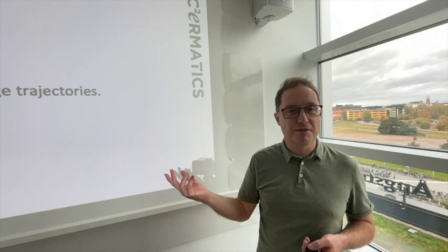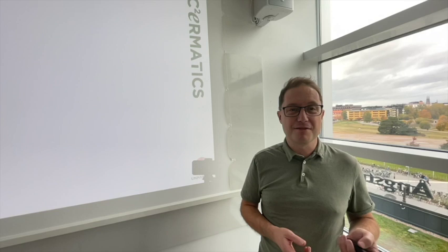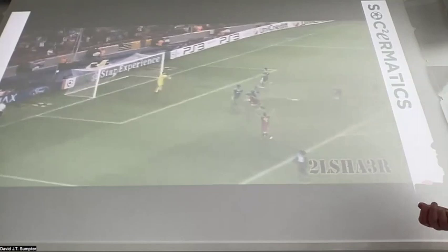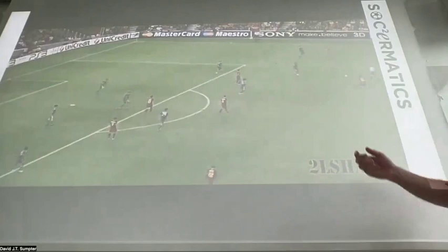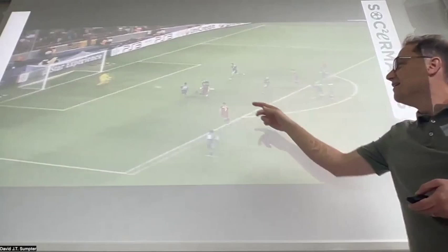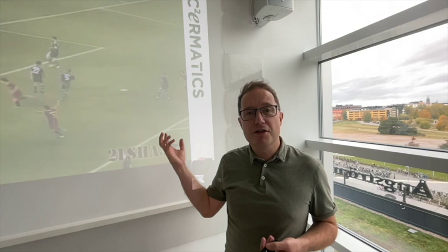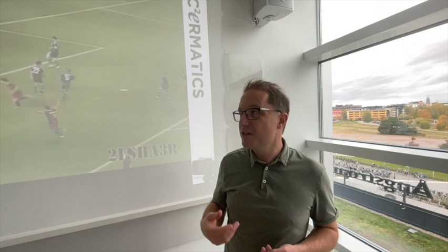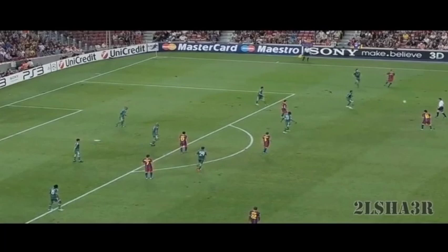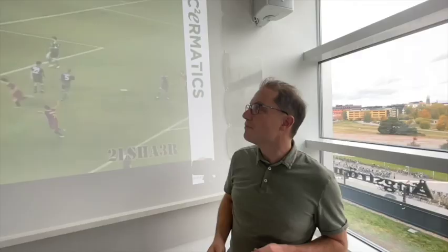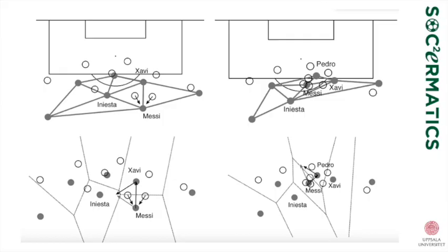So how are we going to analyze this? The first method, which I wrote about in Soccermatics, uses Voronoi diagrams. A particular goal got me interested in studying player movement — it's Lionel Messi, of course: a pass, a dribble, another pass, and he's gone through the entire team to score. This was the tiki-taka era of Barcelona football. The focus is Messi, but there's also interesting interplay with Xavi and Pedro. The Voronoi diagram allows us to see how the players are controlling space.